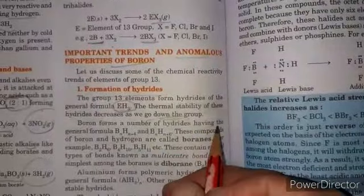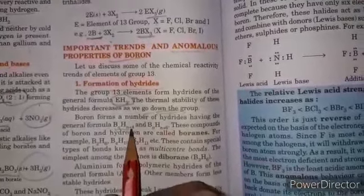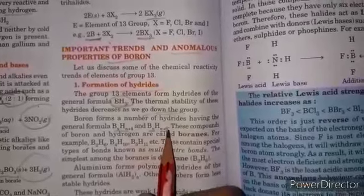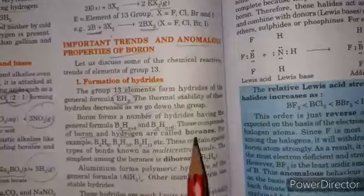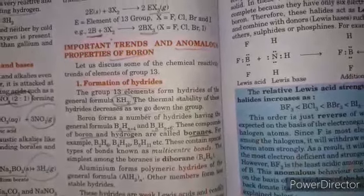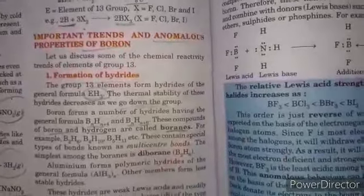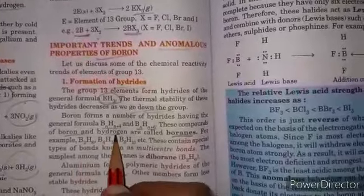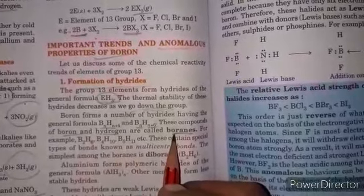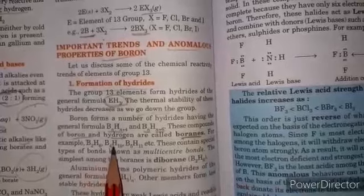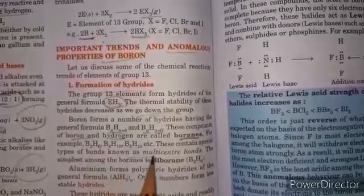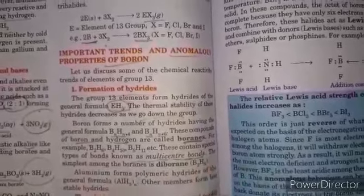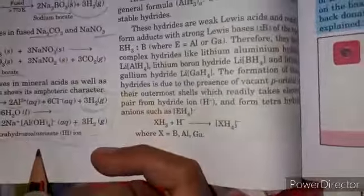When boron reacts with hydrogen it forms BnHn+4, BnHn+6, and so on. These compounds are boron and hydrogen, called boranes, similar to how carbon and hydrogen compounds are called hydrocarbons. For example B2H6, B4H10, B5H11. These contain a special type of bond known as multi-center bond.